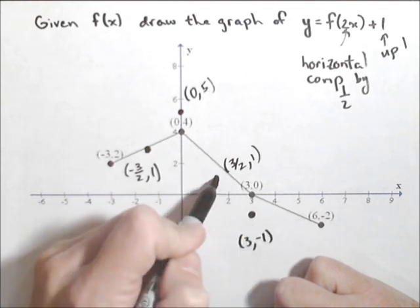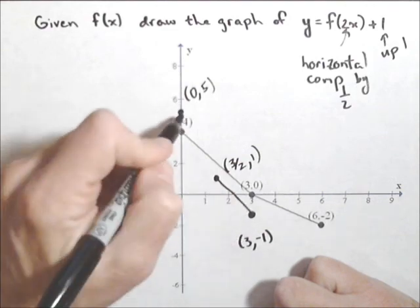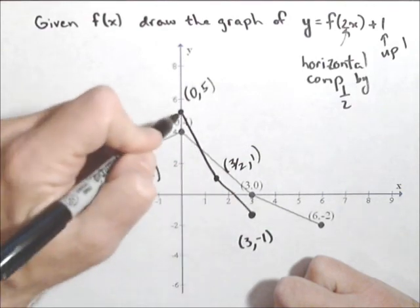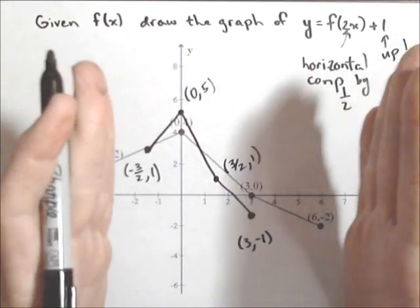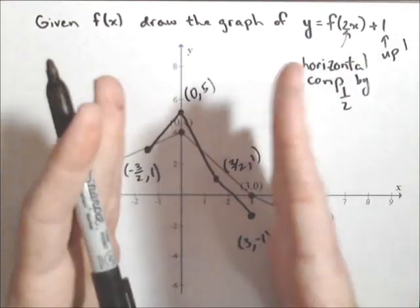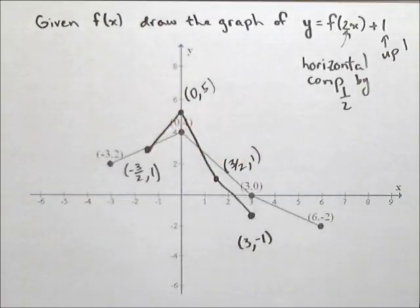And now we can redraw our graph through our points. And remember what happened. Our graph did get shifted up 1. It also got horizontally compressed, so it looks like somebody took both ends and squeezed it in towards the y-axis.